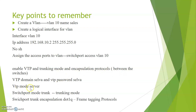First, specify the VTP mode — whether server or client. Then specify the VTP domain name; all switches should be in the same VTP domain. Then specify the trunking mode with switchport mode trunk — it can be trunk, dynamic auto, or dynamic desirable. This trunk mode is an unconditional trunk established between two switches. Then specify the frame tagging protocol using switchport trunk encapsulation dot1Q — it can be either ISL or dot1Q.